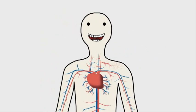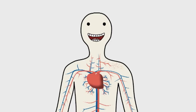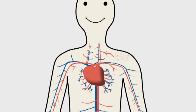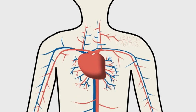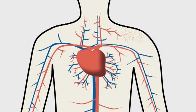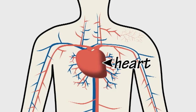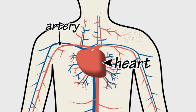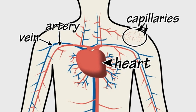Simple Science. What is the cardiovascular system? Your cardiovascular system is made up of your heart and blood vessels, your arteries, veins and capillaries.